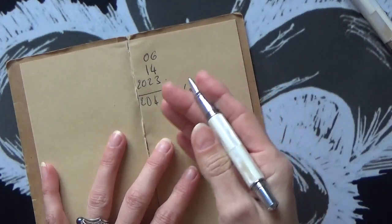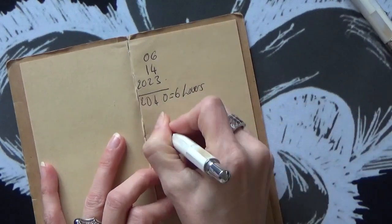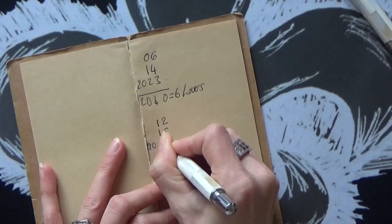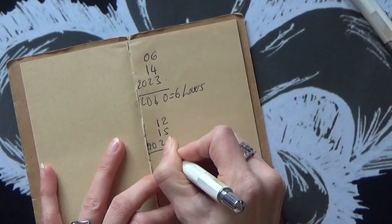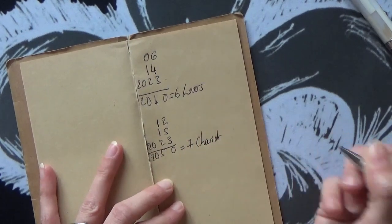So I'll give you another example. Let's say you were born on the 15th of December, so you put December, you put 15th, and then you put 2023. This gives you 2050, which in this case your annual card would be the Chariot.